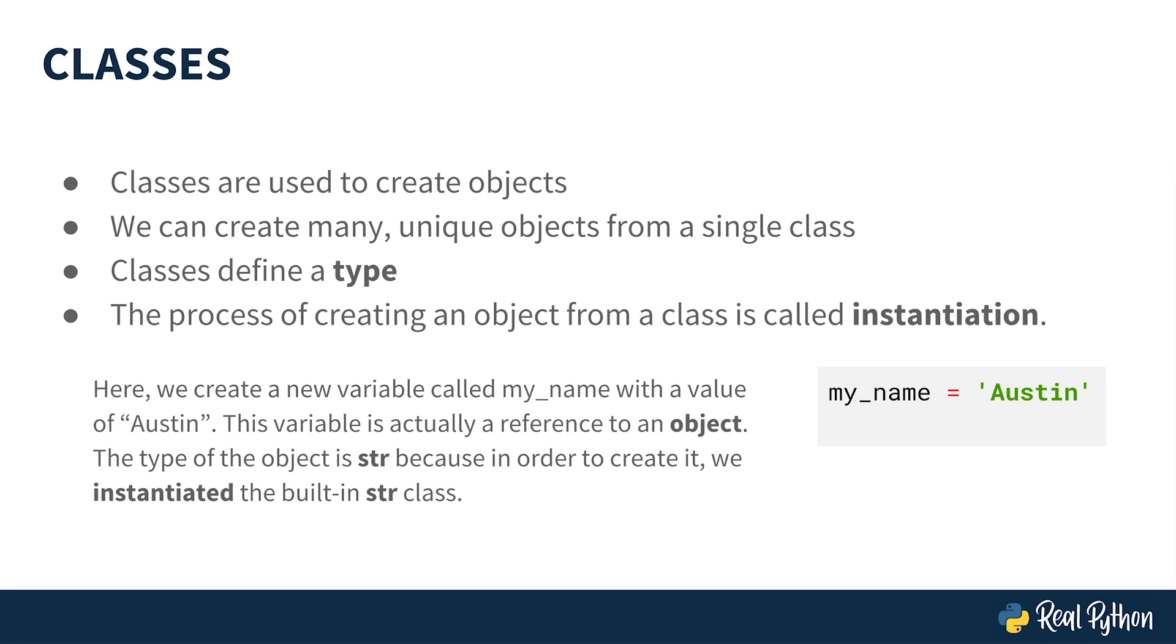For example, take a look at this code: my_name equals Austin. Here, we create a new variable called my_name with a value of Austin. Behind the scenes, this variable is actually referencing an object. The type of the object is str, short for string, which is a built-in Python data type that you've probably used before.